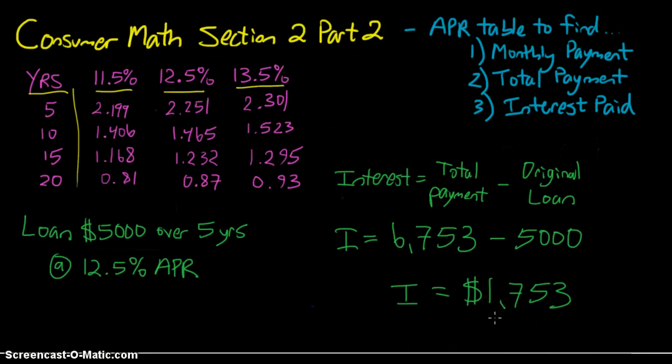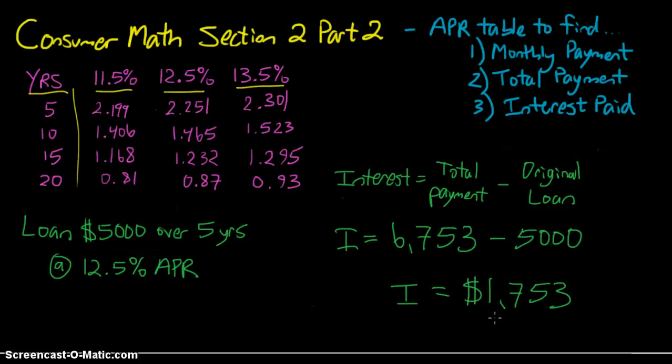So I hope this video helped you and showed you how you need each step along the way to get to the next step. We need to find the total monthly payments first, which will then help us find the total payment that we made, which then helps us find how much interest we actually paid. And how to use then this APR table to help us identify the proper number to use when calculating our interest here.